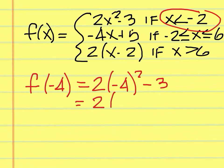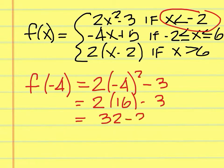The quantity squared of negative 4 is 16. Then multiply 2 times 16 to get 32. 32 minus 3 is going to be 29.